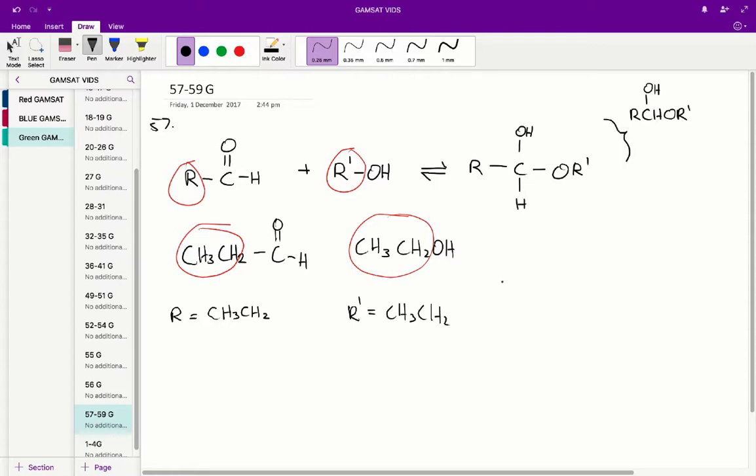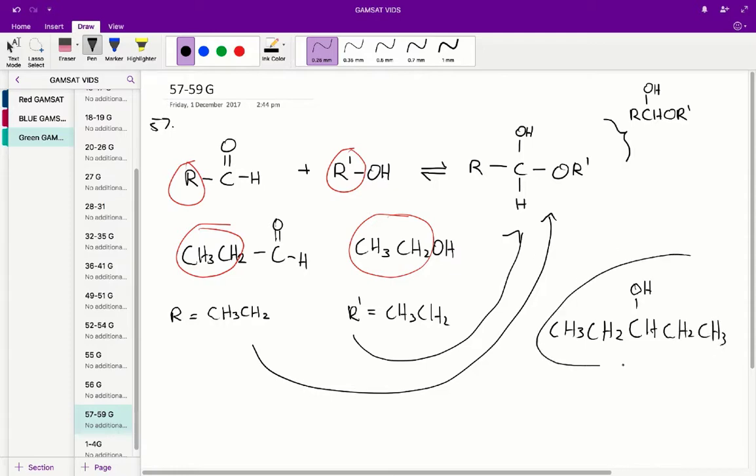So to figure out what our hemiacetyl looks like, we just need to sub in these into the hemiacetyl template, the individual R and R dash alkyl groups. So once we do that, what we get is CH3CH2CHOCH2CH3. So that's what our hemiacetyl looks like if we sub in all of the R dash and R values into that hemiacetyl. And that gives us the answer of C for question 57.